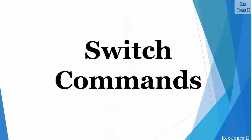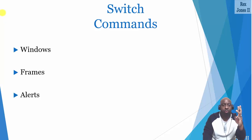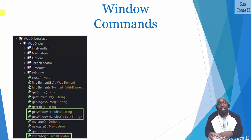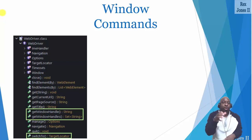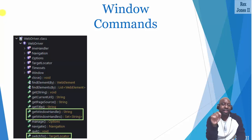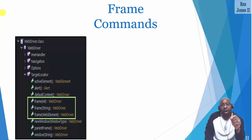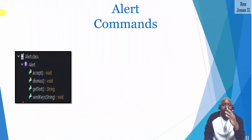Next we look at the switch commands. We can switch to windows, frames, and alerts. There are two commands for switching to a window: get window handle and get window handles. A handle is a unique alphanumeric ID that helps control a window. Get window handle gets the current window handle and get window handles gets a set of window handles. The switch to command is used for switching to a window, frame, or alert. Selenium provides three commands for switching to a frame using index (int), string, or web element. For alerts there are four commands: accept, dismiss, get text, and send keys.